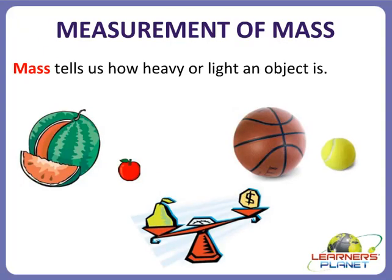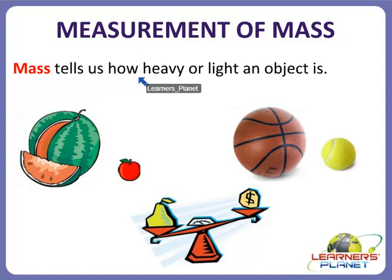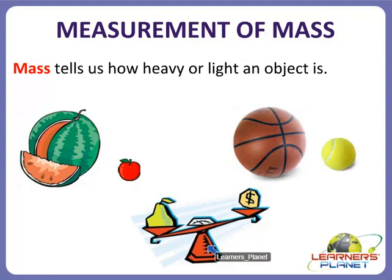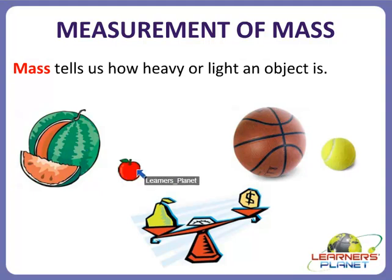Now let's study about measurement of mass. Mass tells us how heavy or light an object is. We use a weighing balance to find the mass of an object. For example, a pear has been measured in the weighing balance. A watermelon is heavier than an apple, so the mass of a watermelon is larger than that of an apple.